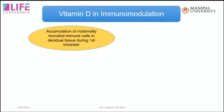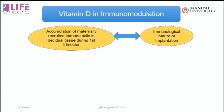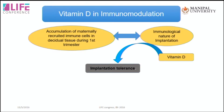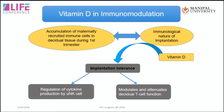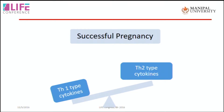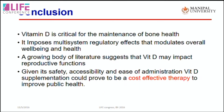Immunomodulation is one of the main areas supporting pregnancy, as it is a key feature of implantation. Implantation tolerance has been proved to be modulated by administration of vitamin D, through regulation of cytokine production by natural killer cells and T cell function. Successful pregnancy depends on a good balance between TH1 and TH2 cells, which vitamin D has been shown to up-regulate.